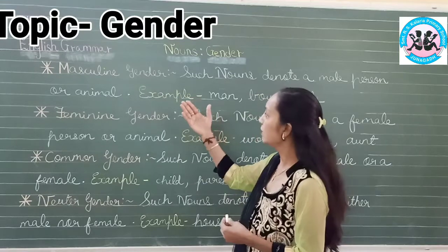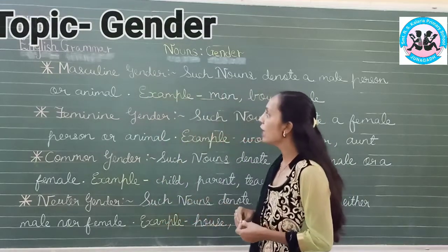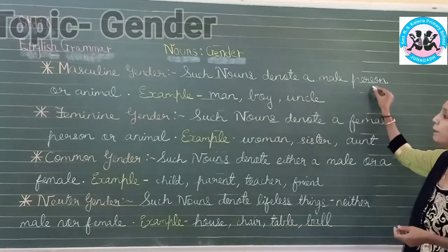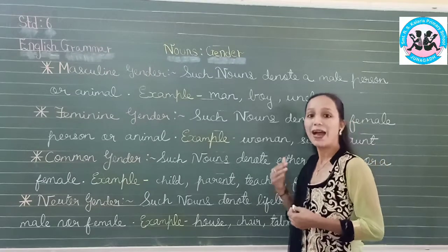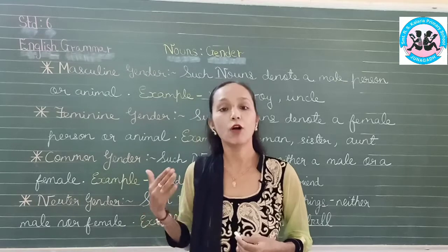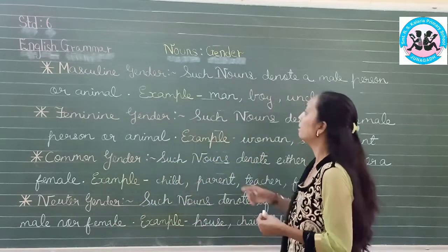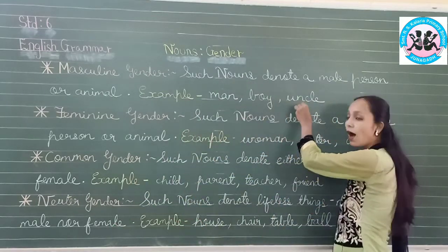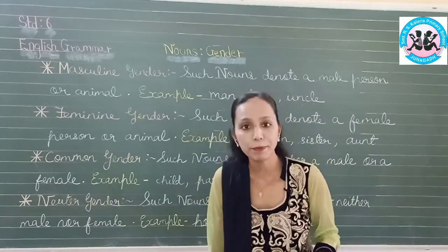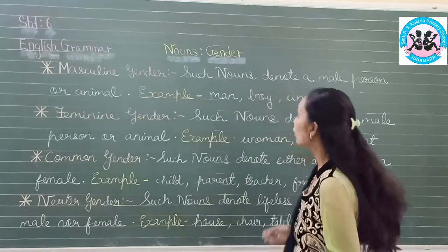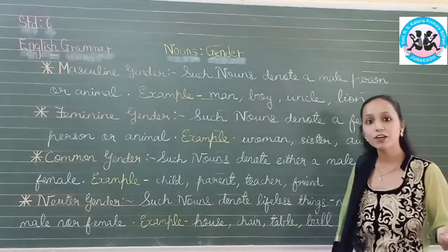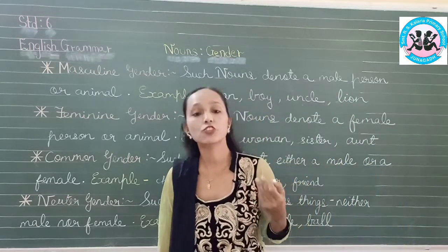Now let us see the first kind of gender: masculine gender. Such nouns denote a male person or animal. Masculine genders refer to male person or animal. Examples: man, boy, uncle, lion, tiger. All these are masculine genders.